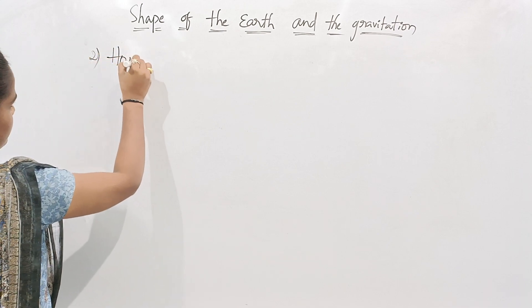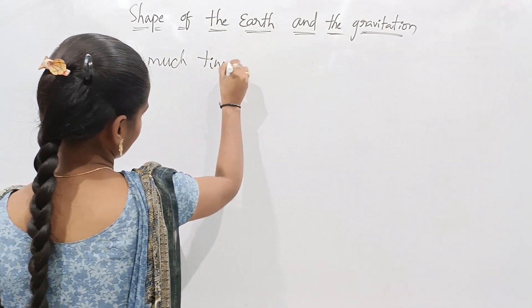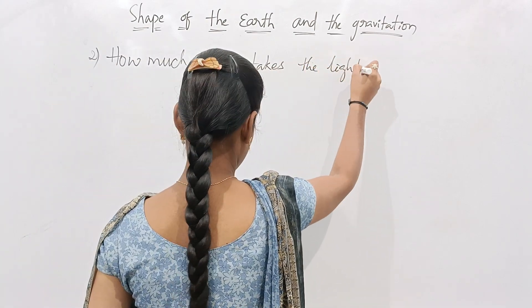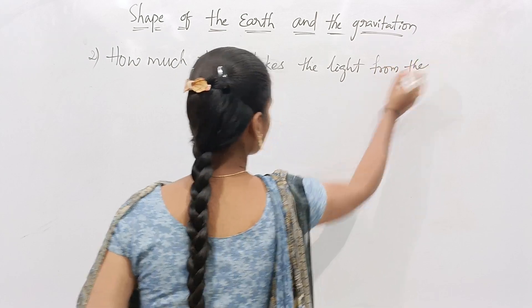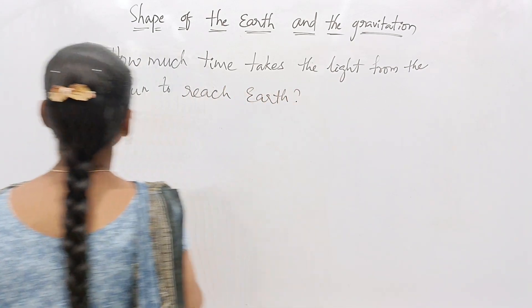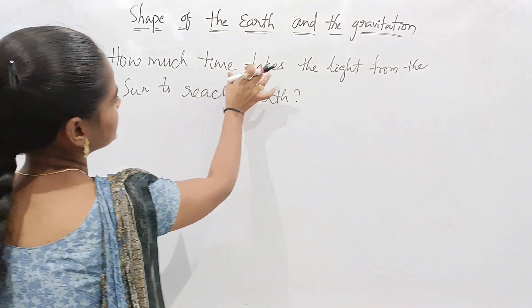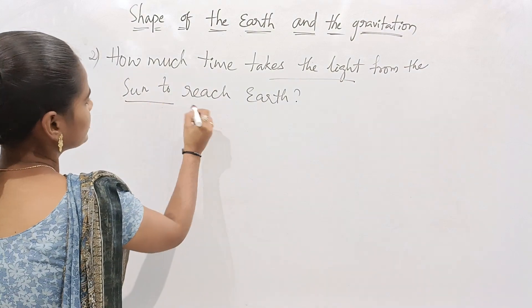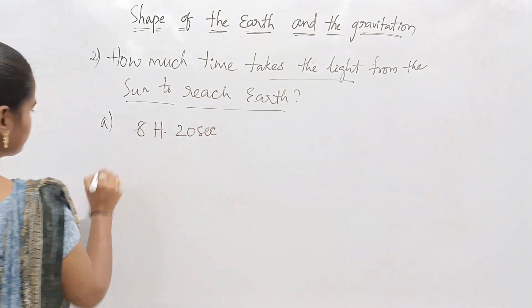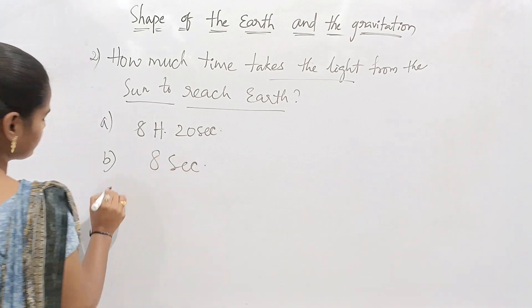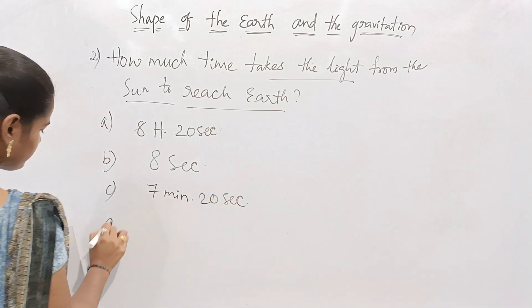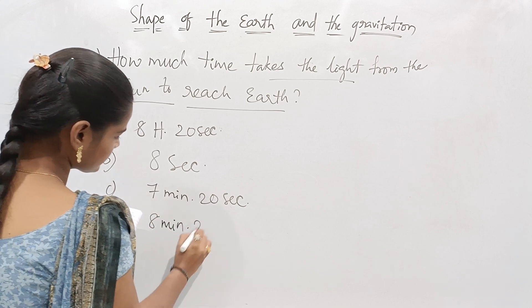The second question is: how much time does light take from the sun to reach earth? Option A is 8 hours 20 seconds, Option B is 8 seconds, Option C is 7 minutes 20 seconds, and Option D is 8 minutes 20 seconds.